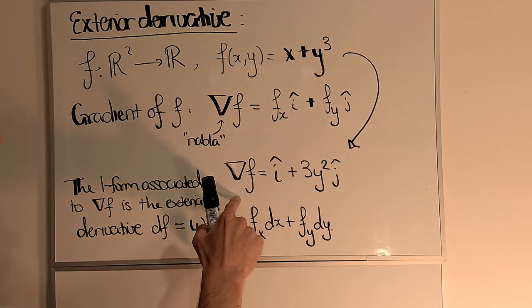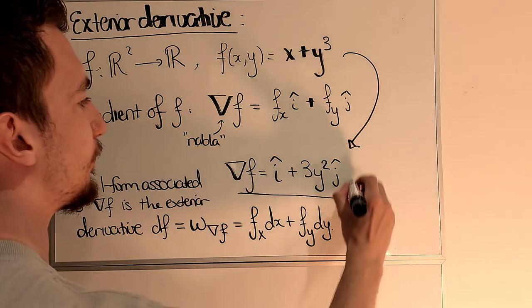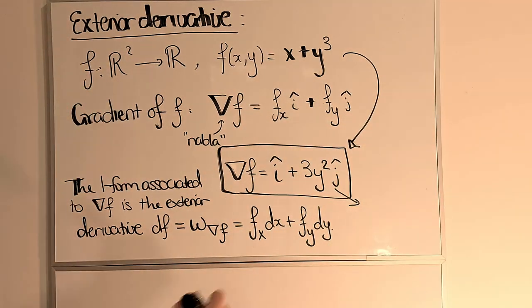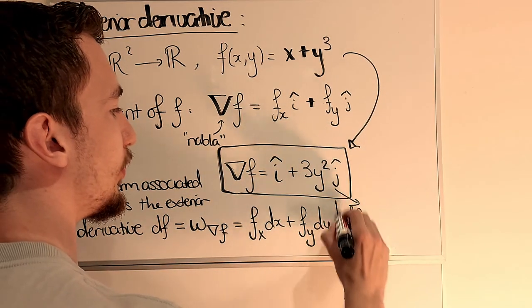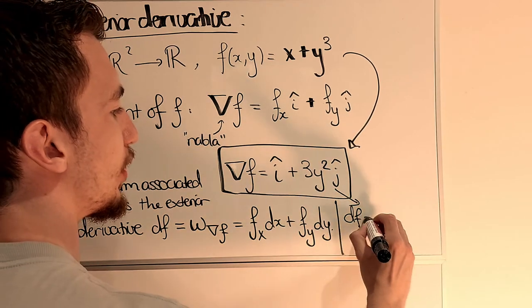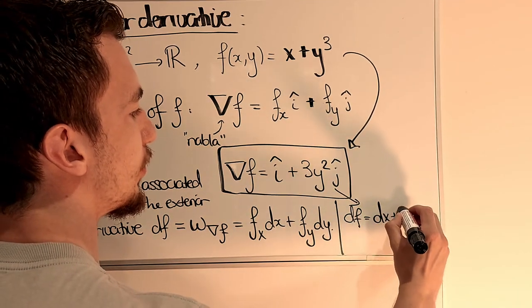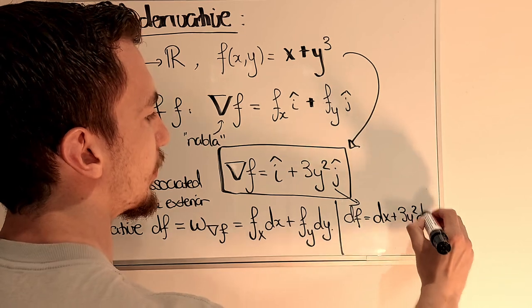So in particular, for this example here, what we see is that the exterior derivative in this case is just dx + 3y² dy.